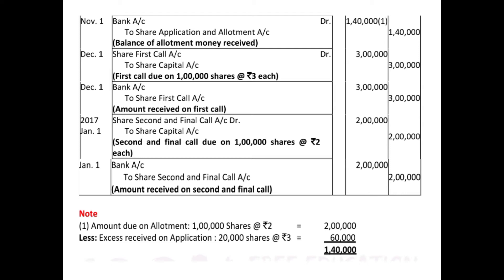For the first call: Share First Call Account debited 3 lakh (1 lakh × 3) to Share Capital Account 3 lakh. Since all due money was received, Bank Account debited 3 lakh to Share First Call Account 3 lakh. For the second and final call on January 1st 2017: Share Second and Final Call Account debited to Share Capital Account 2 lakh (2 rupees × 1 lakh), subsequently received — Bank Account debited to Share Second and Final Call Account.